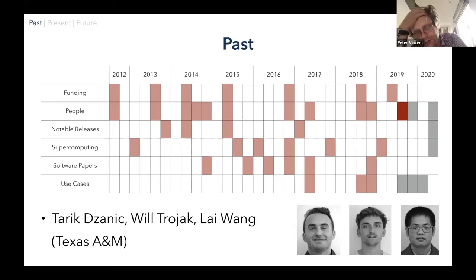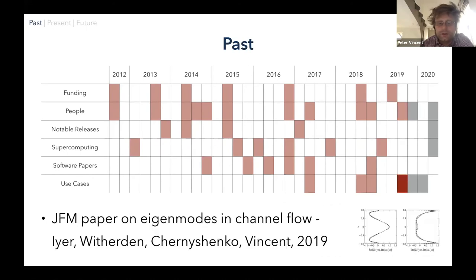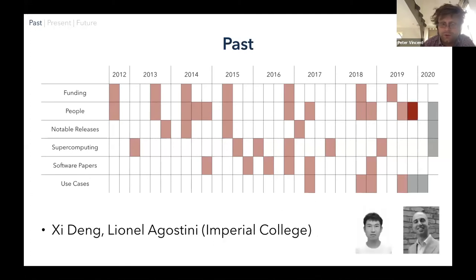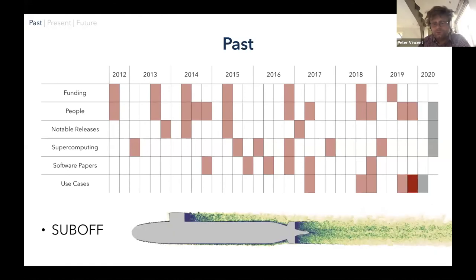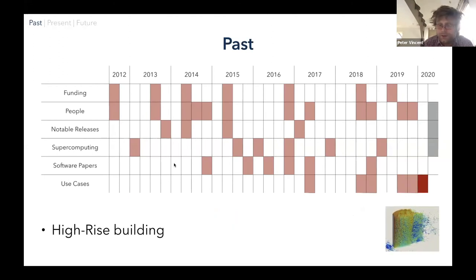In 2019, Freddie had fully established his group at Texas A&M, hiring Tariq, Will, and Lay — Tariq and Will will both be speaking this afternoon. There were also examples of PyFR starting to be used for more fundamental fluid cases, including a JFM paper on eigenmodes in channel flow. Zee joined to work on adding multi-phase technology to PyFR, and Lionel got involved in the HiFi-Turb EU project. Even more substantial test cases followed — the DARPA Suboff test case from Nicky Loppy's incompressible solver work, and the building test case in collaboration with Arup, all enabled by Steve Karman and Pointwise's high-order meshing technology.